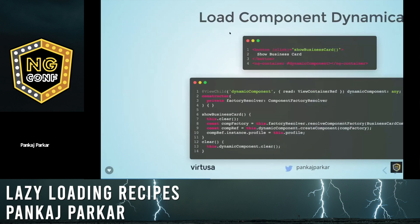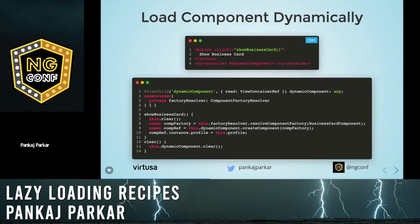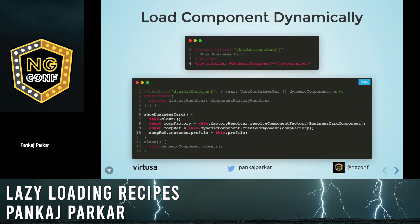Let's start with the first recipe, which is a very simple technique we've likely used before. We have a button on HTML calling a show business card method to display a business card. Inside a component, using ViewChild, it gets hold of the container. Inside the show business card method, we use a factory resolver to resolve the factory of the component.